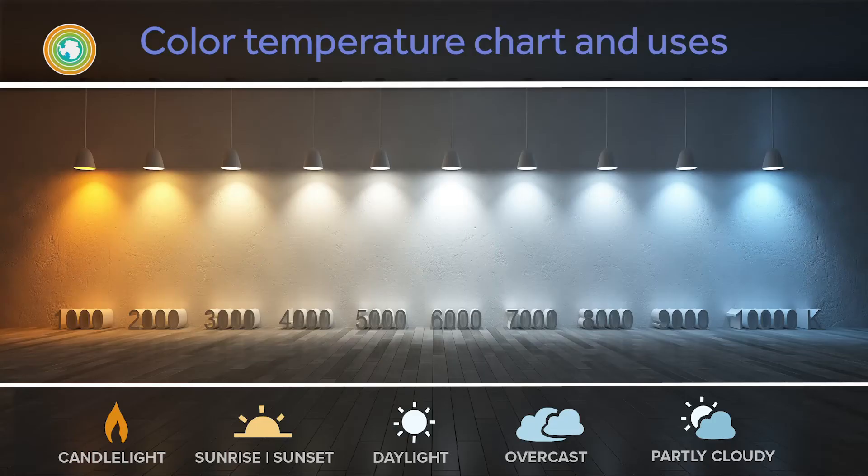One key to successful lighting is matching the color of your light sources. Cameras are very sensitive to small color shifts in light, so if your lighting includes the sun, all bulbs should be daylight balanced to match.